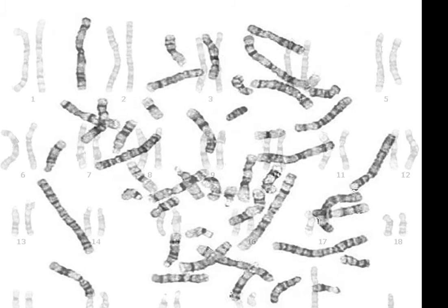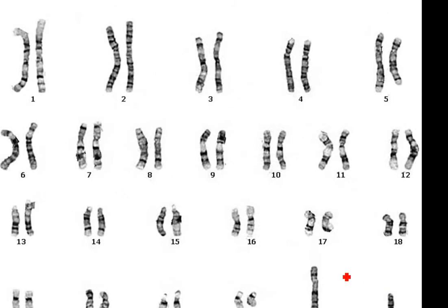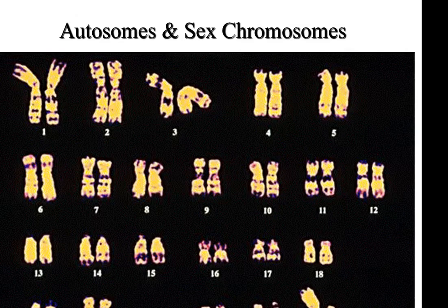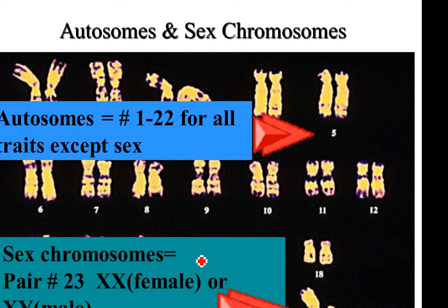That was a female — there are two X's. Females are double X's; males have an X and a Y. Chromosomes 1 through 22, if we're talking about a human, are called autosomes. The sex chromosomes are pair 23. Some will label it 23; some will just call them the X and Y chromosome.